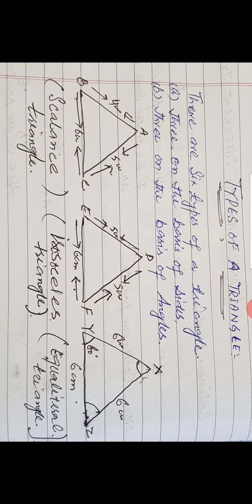Suppose we have three triangles drawn here. The first triangle is ABC with sides four centimeters, six centimeters and five centimeters. The second triangle is DEF with sides five centimeters, five centimeters and six centimeters. The third triangle is XYZ with all sides six centimeters, six centimeters and six centimeters. All of these are triangles — let us note the difference between them.